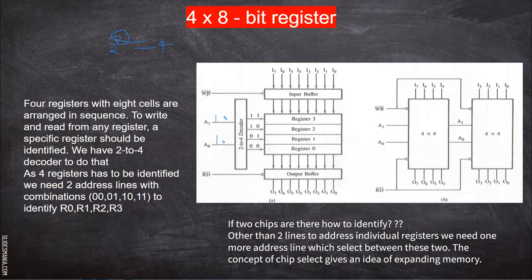Now imagine it is a write signal. You are going to write something into register three — you have to place the address one-one because I want to write to register three. So you place the value 11 so that this individual register can be addressed, and place zero for the write signal. It gets converted and one will come. The input buffer is enabled, so whatever is placed on the input will be placed in the input buffer, which in turn will be placed in register three. The data is written to register three.